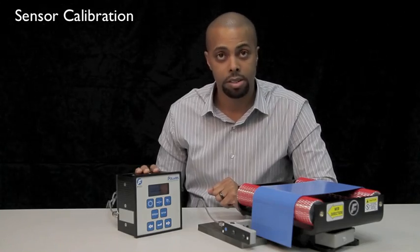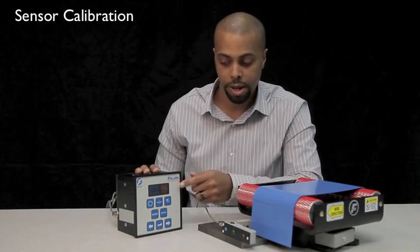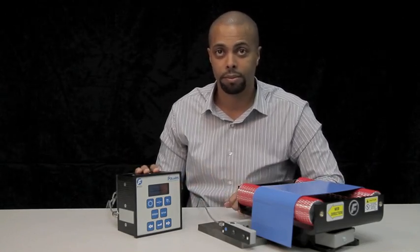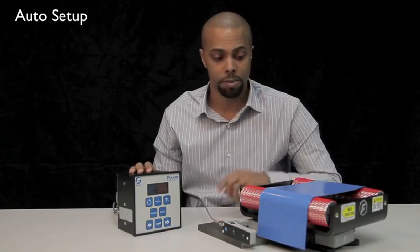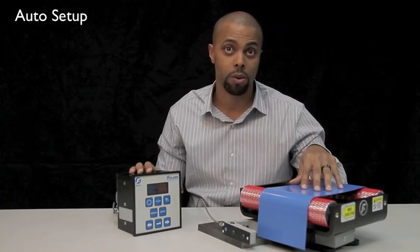Once the calibration is successful, your Polaris will escape back out to your main screen. Now we will perform an auto setup using the blue metal strip as our web with tension.